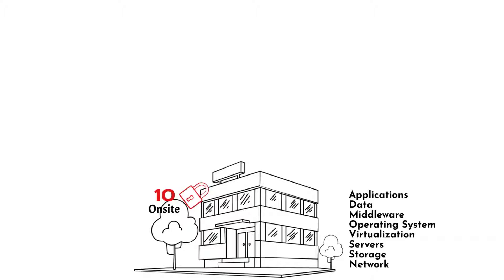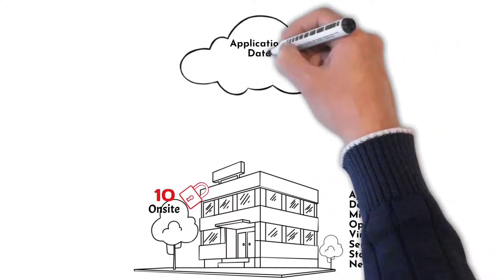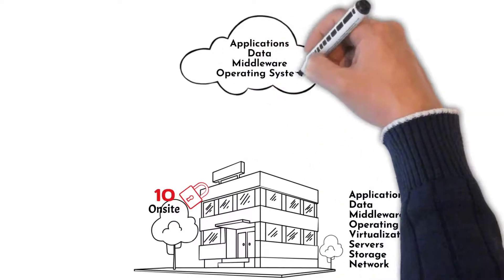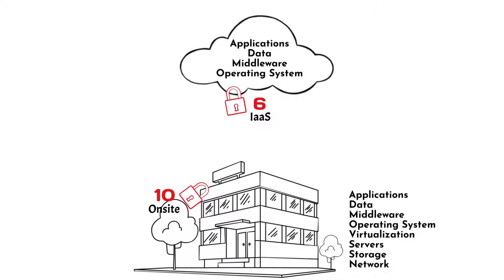The next area is infrastructure as a service, and notice the number is six — less work for the organization. You manage applications, data, middleware, and the operating system in that model. Virtualization, server storage, network, firewalls, and boundary protection are all typically provided by the cloud provider.